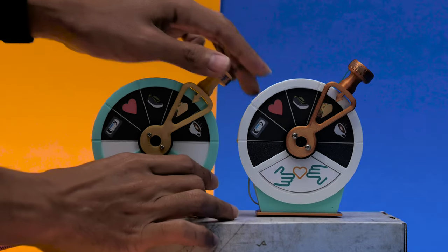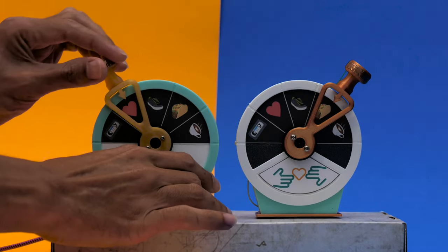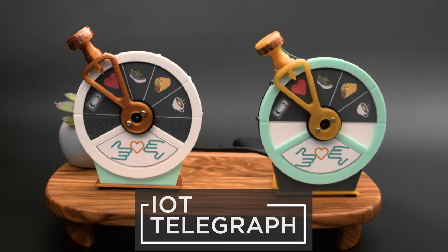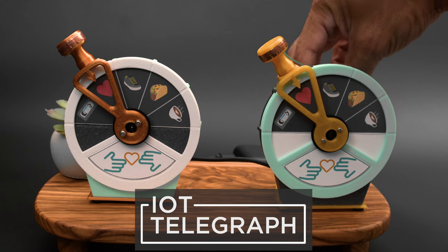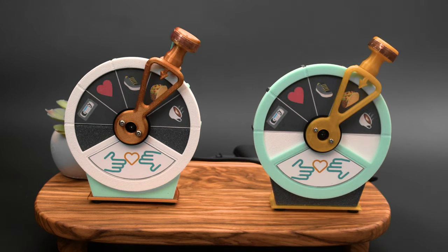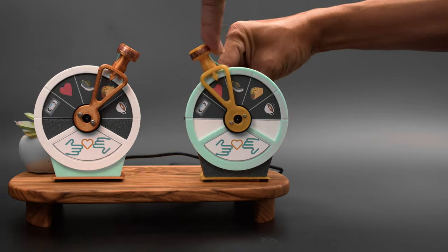You can build an IoT telegraph with analog feedback servos and Circuit Python, inspired by ship engine telegraphs. This uses analog feedback servos to make a simple yet modern two-way communication system. Use it to keep in touch with a